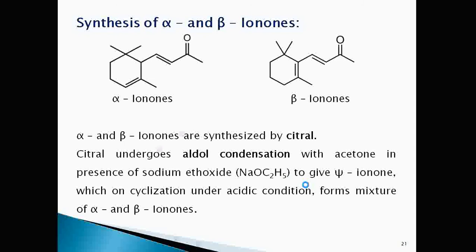Now, let us see synthesis of alpha and beta ionone. These are synthesized from citral. Citral undergoes aldol condensation with acetone in presence of sodium ethoxide that is base to give gamma ionone which on cyclization under acidic condition forms mixture of alpha and beta ionone. This reaction is given here.